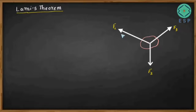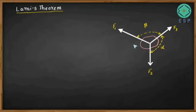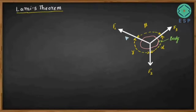The angle opposite to F1 — let me call this angle alpha. The angle opposite to F2 — let me call this angle beta. And the angle opposite to F3 — let me call this angle gamma. So forces F1, F2, and F3 are keeping this body in the equilibrium condition.